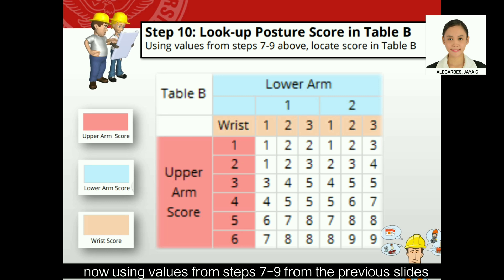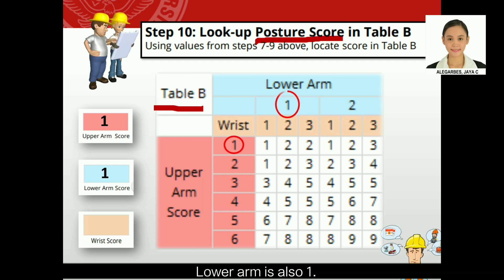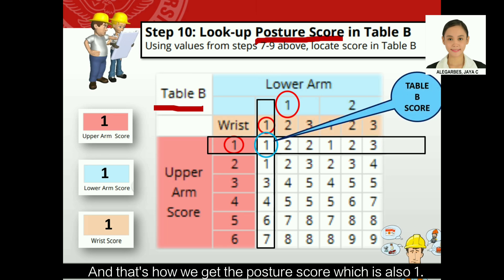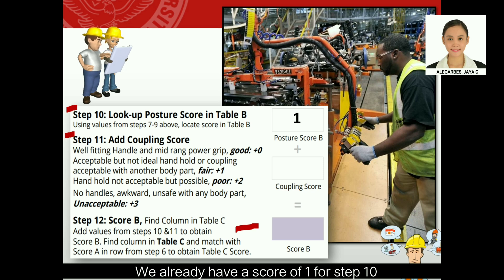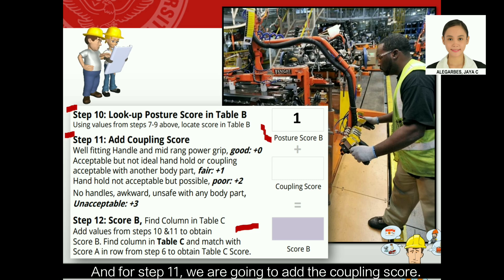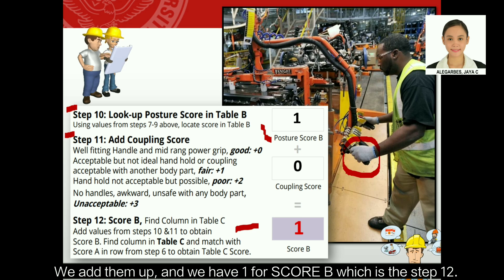Using values from steps seven to nine, we locate the posture score in Table B. The upper arm score is one, lower arm is also one, and wrist score is one, giving a posture score of one for step ten. For step eleven, we add the coupling score. The worker's hands are well fitted to the handle with a good mid-range power grip, so that's a plus zero. Adding them up gives Score B of one for step twelve.